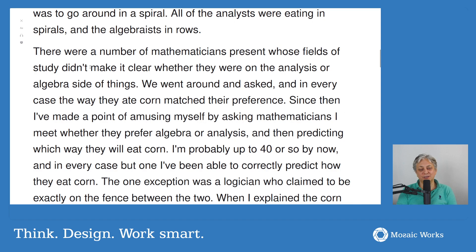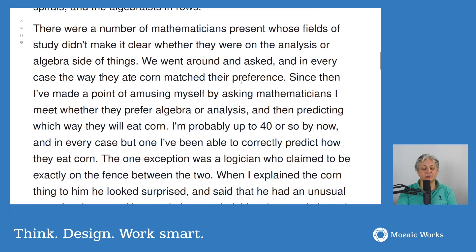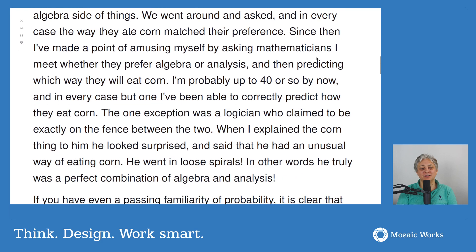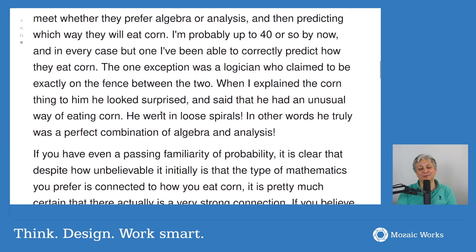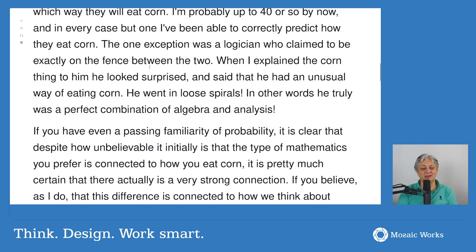The author then analyzed this further. There were mathematicians present whose field didn't make it clear whether they were on the analysis or algebra side, so they went around and asked. In every case, the way they ate corn matched their preference. Since then, the author has been predicting how mathematicians eat corn — up to about 40 cases, correct in all but one. The one exception was a logician who claimed to be exactly on the fence, and said he ate corn in loose spirals — a perfect combination of algebra and analysis.